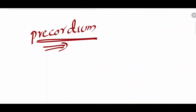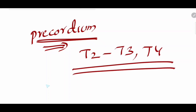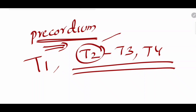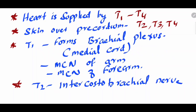The precordium is supplied by T2, T3, and T4. To summarize: T1 forms the medial cutaneous nerve of the arm and medial cutaneous nerve of the forearm via the medial cord of the brachial plexus. T2 is the intercostobrachial nerve, and the precordium is supplied by T2 and T3.